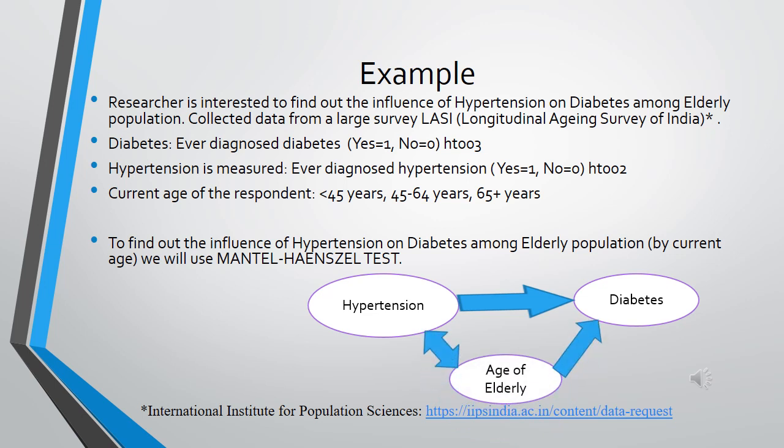We will illustrate this with an example. A researcher is interested to find out the influence of hypertension on diabetes among the elderly population. Data was collected from a large survey called LASI — the Longitudinal Aging Survey of India. From that data, we collected information on diabetes (ever diagnosed diabetes: yes=1, no=0), hypertension (ever diagnosed hypertension: yes/no), and the third confounding variable — current age of the respondent, categorized as less than 45 years, 45 to 64 years, and 65 plus. To find out the influence of hypertension on diabetes among the elderly population, we will use the Mantel-Haenszel test.